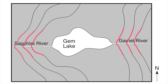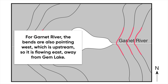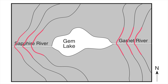Now let's look at Garnet River on the other side. For Garnet River, the bends are also pointing to the west. So to the west is upstream, which means the river is flowing to the east — in this case flowing away or out of Gem Lake. So to sum up, rivers and streams always flow opposite where the bends in the contour lines are pointing. If you ever need to figure this out, just highlight the contour lines, and the river is flowing opposite where that bend is pointing.